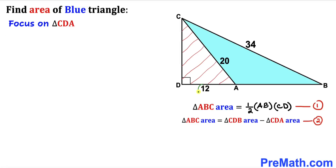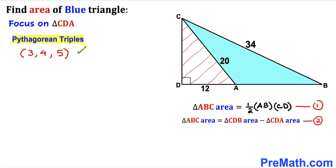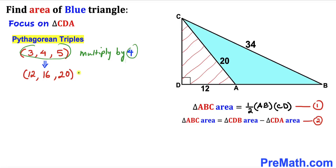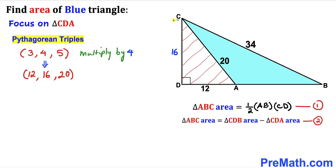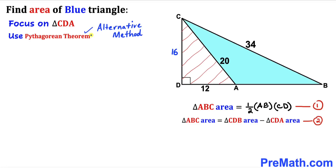Let's recall the Pythagorean triplet 3-4-5. If we multiply these numbers by 4, our Pythagorean triplet becomes 12, 16, and 20. Since one side is 12 and the hypotenuse is 20, this side length CD must be 16. So CD turns out to be 16 units.